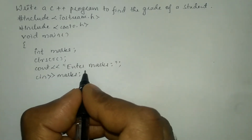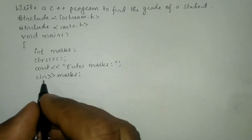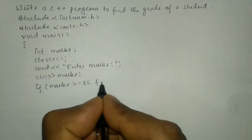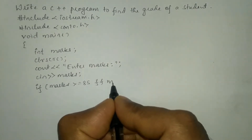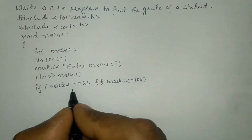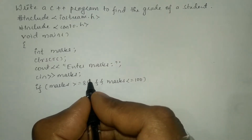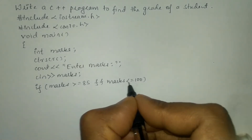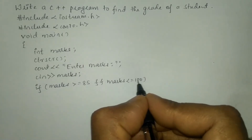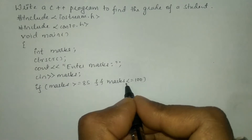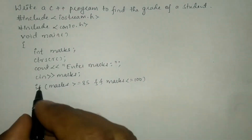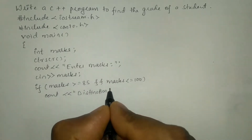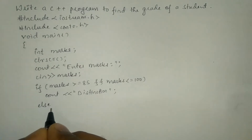Whatever the user enters will be stored in the variable called marks. Next we are going to check: if marks is greater than or equal to 85 — using the logical AND operator — and marks is less than or equal to 100. Some students may score above 85 and some may score 100 percent, so that's the reason we have written less than or equal to 100. If this condition is true, we write cout with 'distinction' in double quotation marks and put a semicolon.